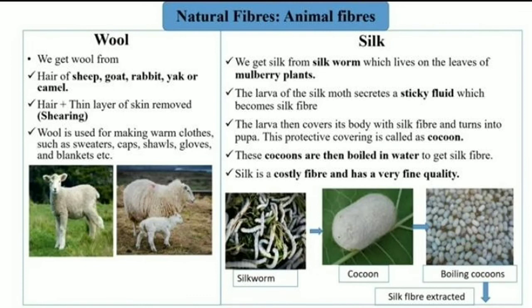The next natural fibers are animal fibers — wool and silk. We get wool from the hair of sheep, goat, rabbit, yak, or camel. The hair plus a thin layer of skin is removed, and this process of removal of hair is called shearing. Wool is used for making warm clothes such as sweaters, caps, shawls, gloves, blankets, etc.